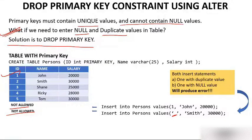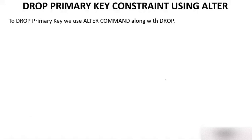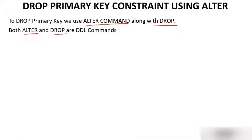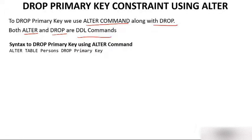Both insert statements — one with a duplicate value and one with a null value — will produce an error. But what you want is no error and your values should get inserted. So the solution is to drop the primary key. To drop a primary key we use the ALTER command. Both ALTER and DROP are DDL commands — Data Definition Language commands.